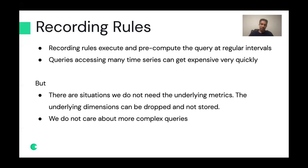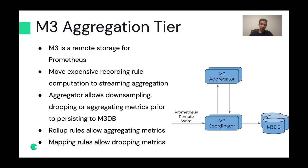For those cases, I want to go over the M3 aggregation tier, which doesn't support all the functionality that recording rules do but does aggregations in a different style. M3 is a remote storage for Prometheus that moves the expensive recording rule computation to a streaming aggregation tier — it's not running the query engine itself, but rather happens in a streaming aggregation tier before metrics get persisted. The aggregator allows downsampling, dropping, or aggregating metrics prior to persisting them to remote storage — in this case M3DB.